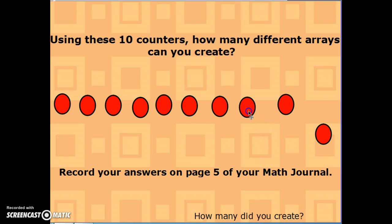The first array we're going to make is one row with ten in that row. So really, we're just putting these counters in a nice straight line. Okay, so one row with ten in a row.